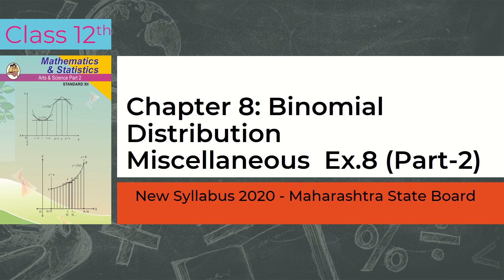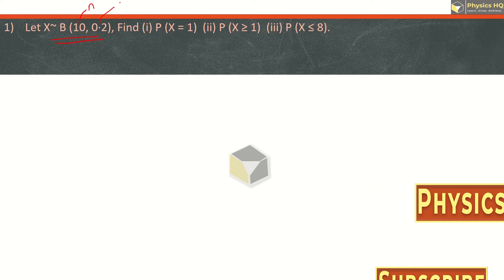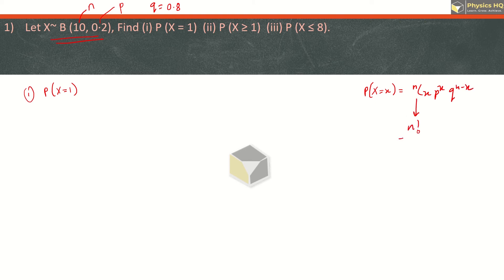Let us start with the first sum. Let x follow Binomial Distribution, where the number of trials is n and the probability of success is 0.2. So here we will get Q = 1 - P, which is 0.8. We will find the probability for x equal to 1 success. The probability of X taking value x is nCx times p raised to x times q raised to n-x. The nCx formula is n factorial upon x factorial times (n-x) factorial.